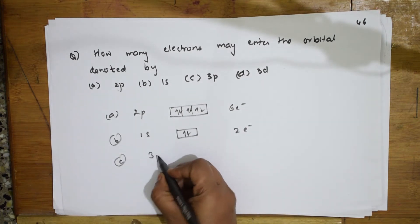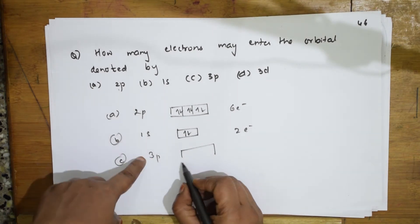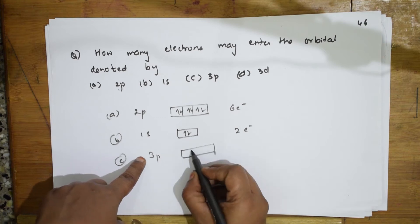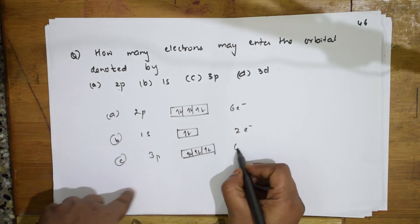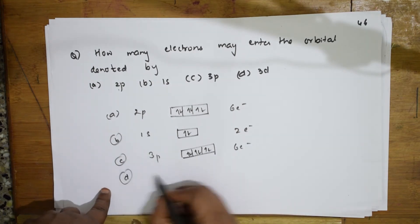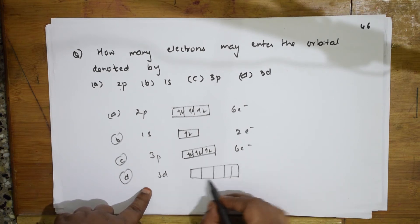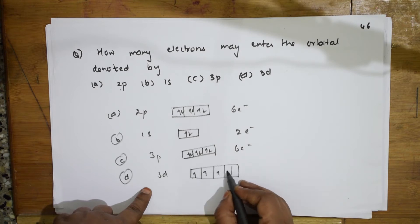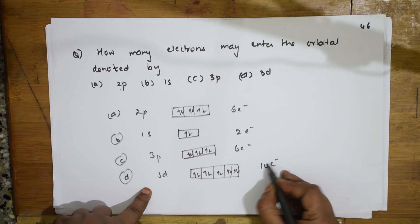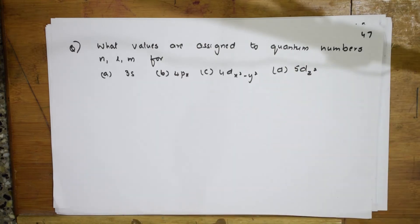For 3P: P has 3 orbitals. N is the principal quantum number indicating the shell, and P is the subshell. So 3P gives 6 electrons. For D: D has 5 orbitals — dxy, dxz, dyz, dx²-y², dz². All half-filled first, then fully filled. Total of 10 electrons.